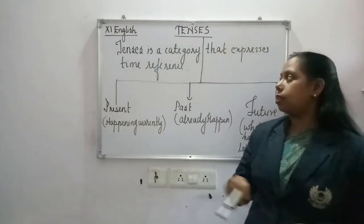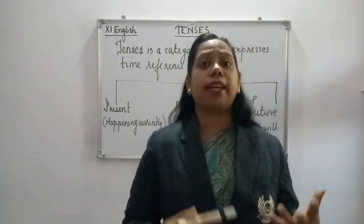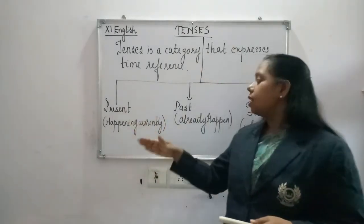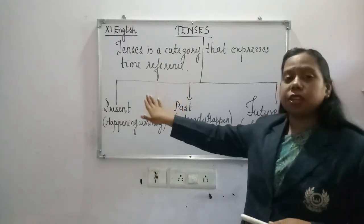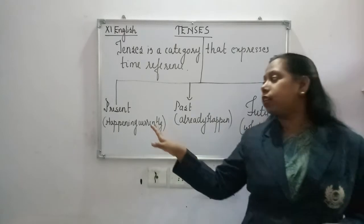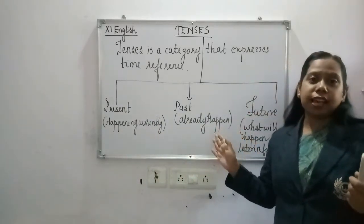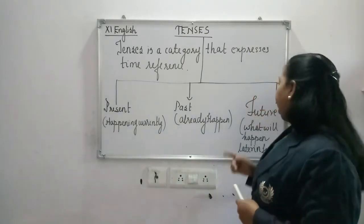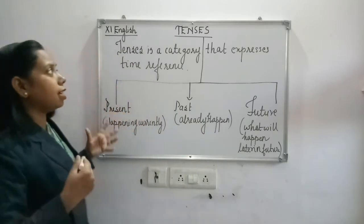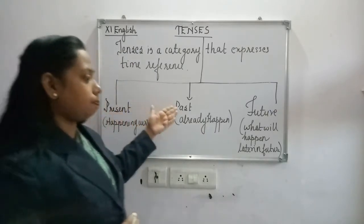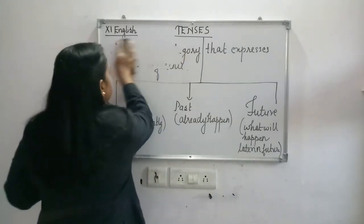Now, what is tenses? Tenses is a category that expresses time reference — tenses tell us about time. Time has three types: one is the present tense, another is the past tense, and the third is the future tense. Present tense is what is happening currently. Past tense is something that has already happened. Future tense is what is going to happen. Now each tense also has four different aspects.